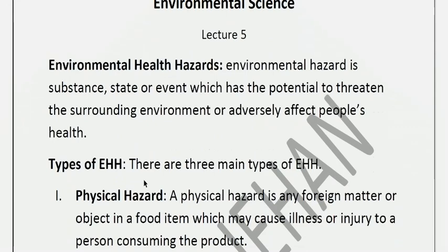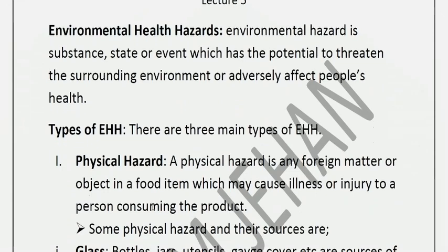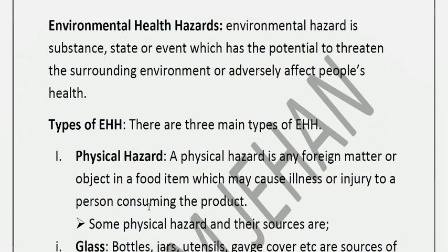There are mainly three types of environmental health hazards: physical hazards, chemical hazards, and biological hazards. A physical hazard is any foreign matter or object in a food item which may cause illness or injury to a person consuming the product.